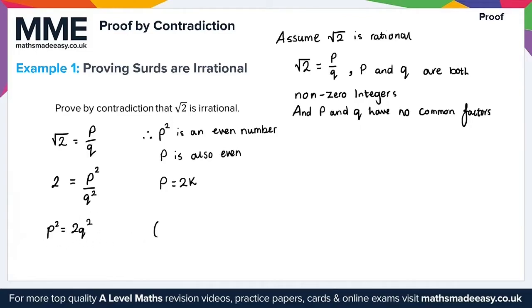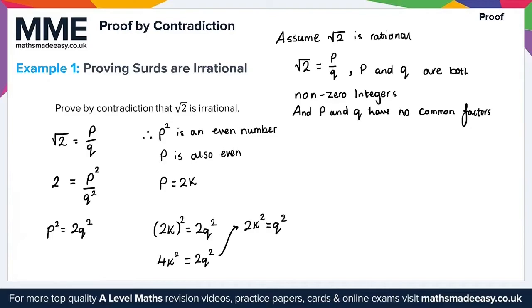Substituting P = 2K back into P squared = 2Q squared, we get (2K) squared = 2Q squared, which gives 4K squared = 2Q squared. Dividing both sides by 2, we get 2K squared = Q squared. Just as we deduced P squared was even, we can now deduce that Q squared must be an even number, which means Q must also be even.